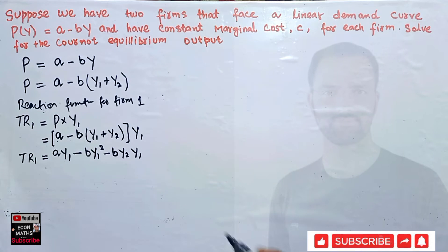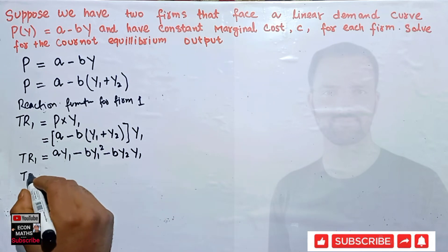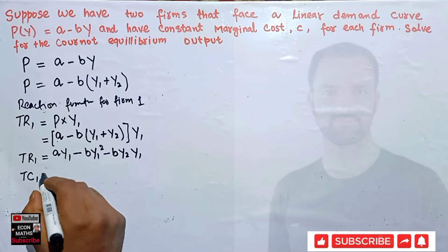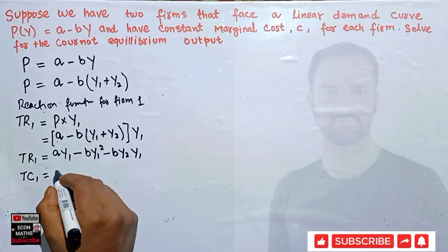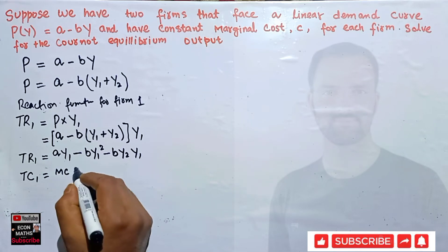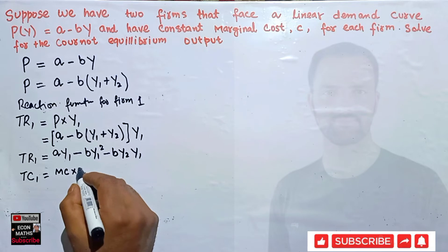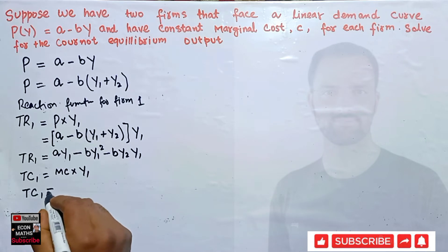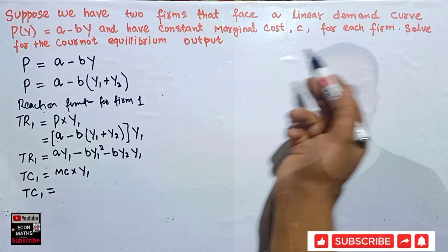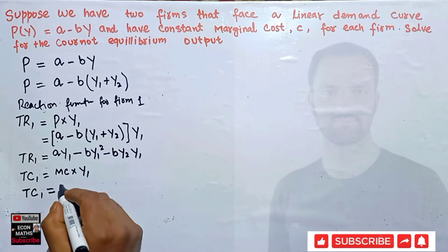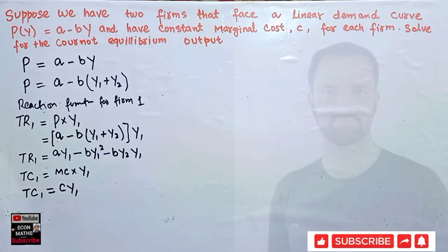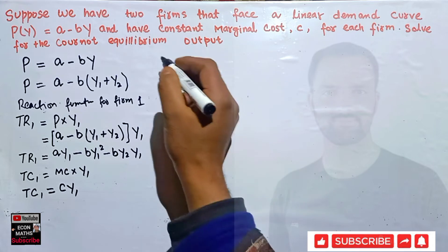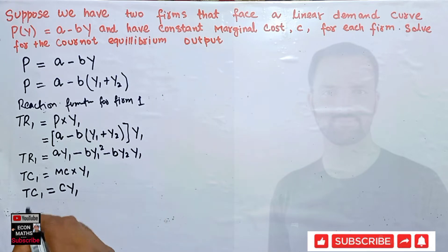Total cost for firm one is simply marginal cost times output produced by firm one. Since marginal cost is given as c, total cost TC1 = c × Y1.